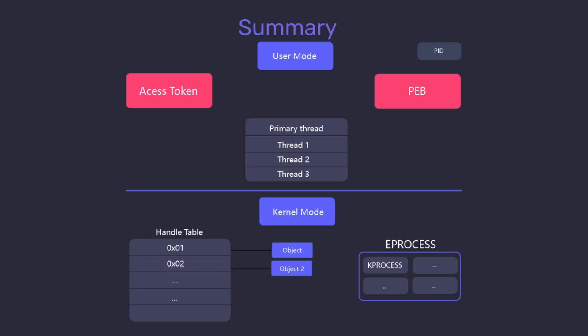To summarize: a process has a process ID as its unique identifier on the operating system. Its virtual memory is divided into a user mode part and a kernel mode part. It has an access token which is the security context of the process, storing information about what the process can access and which user created it. It has a PEB containing a lot of information about the process on the user mode side. On the kernel side, we have EPROCESS — the kernel representation of a process — and KPROCESS, which is part of the EPROCESS structure. The handle table is stored on the kernel mode side and holds memory addresses of each handle the process has opened.